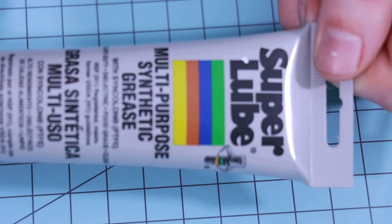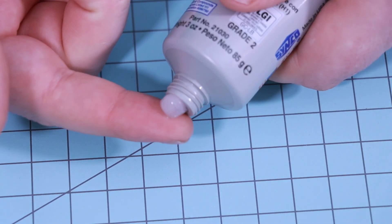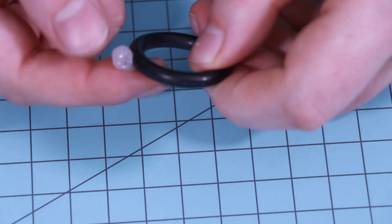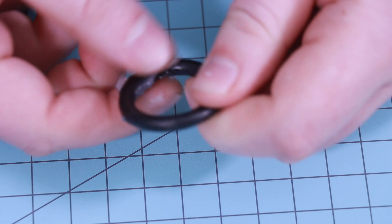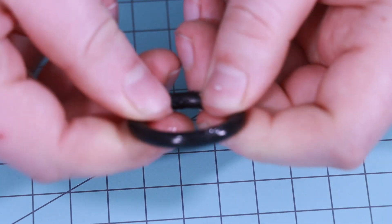We want to use some super lube to lubricate our o-rings. Gonna take just a small little dab on the finger and rub it over the o-ring. You just want enough to get it shiny.